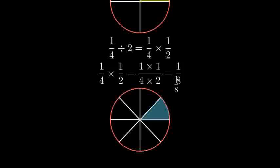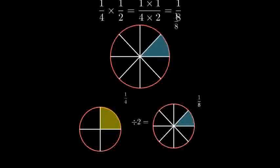Let's compare our original one-fourth with our result of one-eighth. When we divide one-fourth by two, we get one-eighth, which is exactly half of one-fourth. This makes sense, because dividing by two means splitting something into two equal parts.